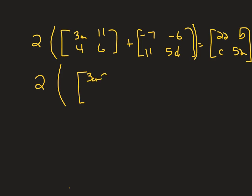So if I add those, I'll get 3a minus 7. Can't combine those. 11 minus 6 is 5. 4 plus 11 is 15. 6 plus 5d. I can't add those either, so I'm going to leave it like that. And then it equals this on this side. 22b, c, and 52.